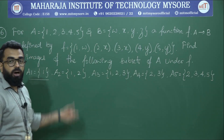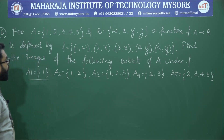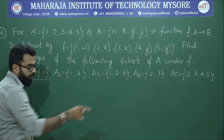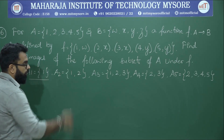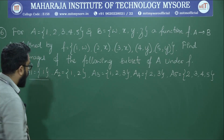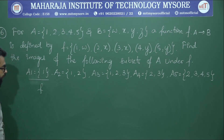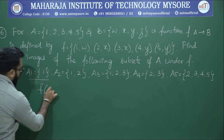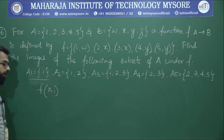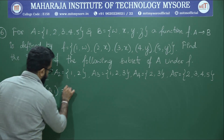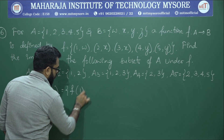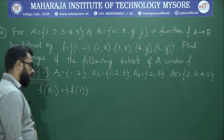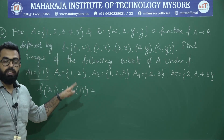We need to identify the images of these subsets. We already know what a function, image, and pre-image are. Using the function f and the given subsets, we can identify their images. For the first subset A1, which consists of the single element 1, we need to find f(1).